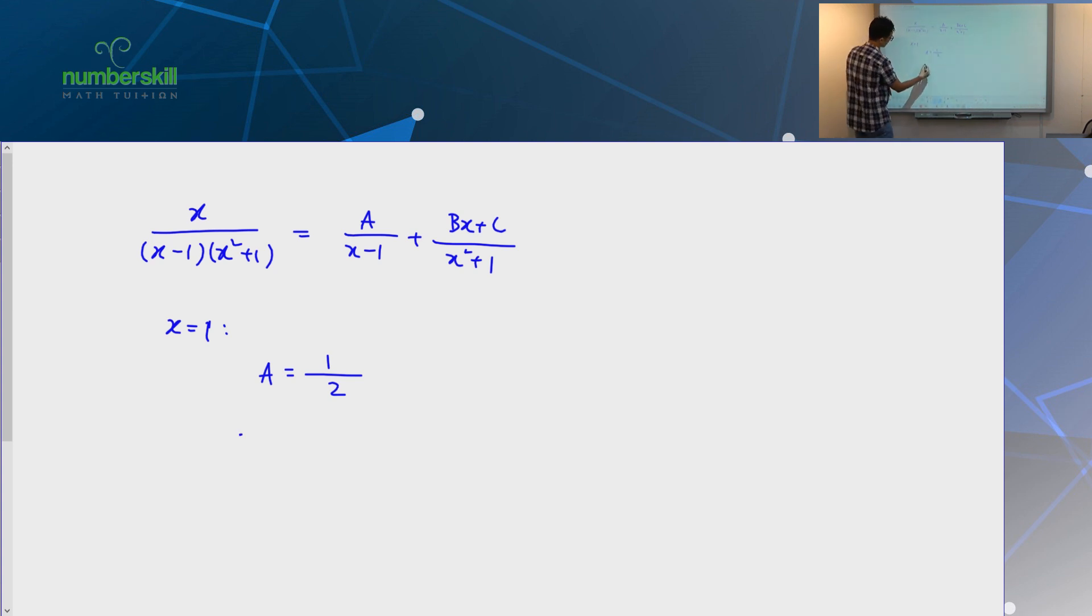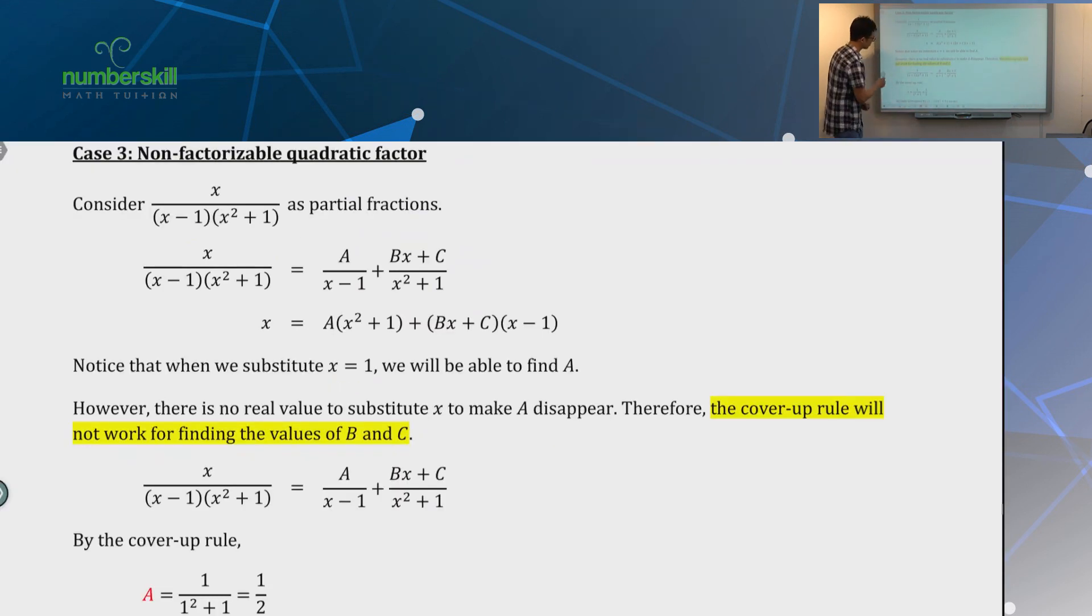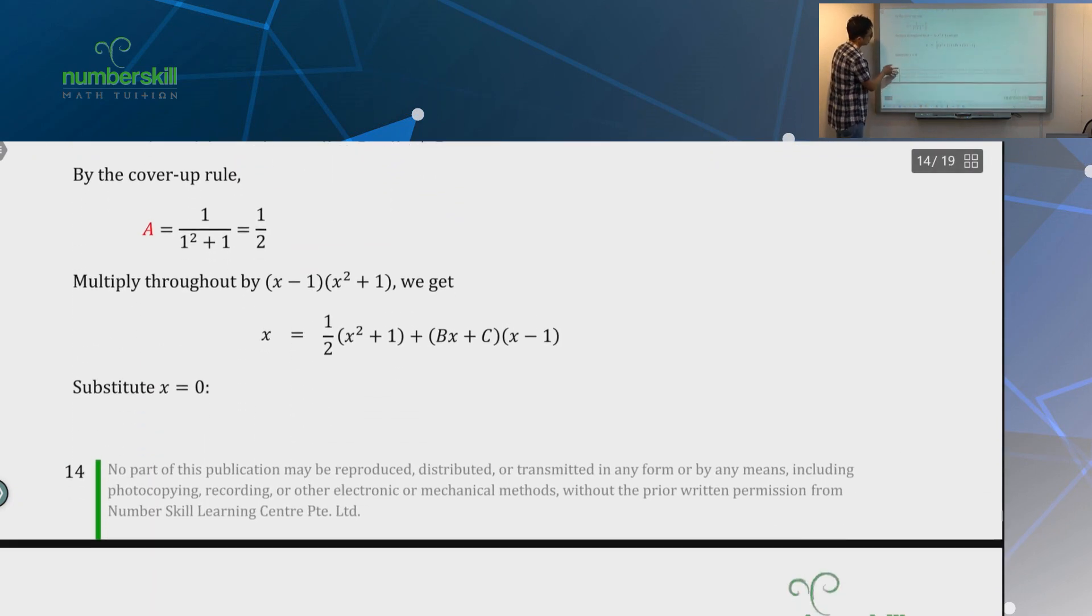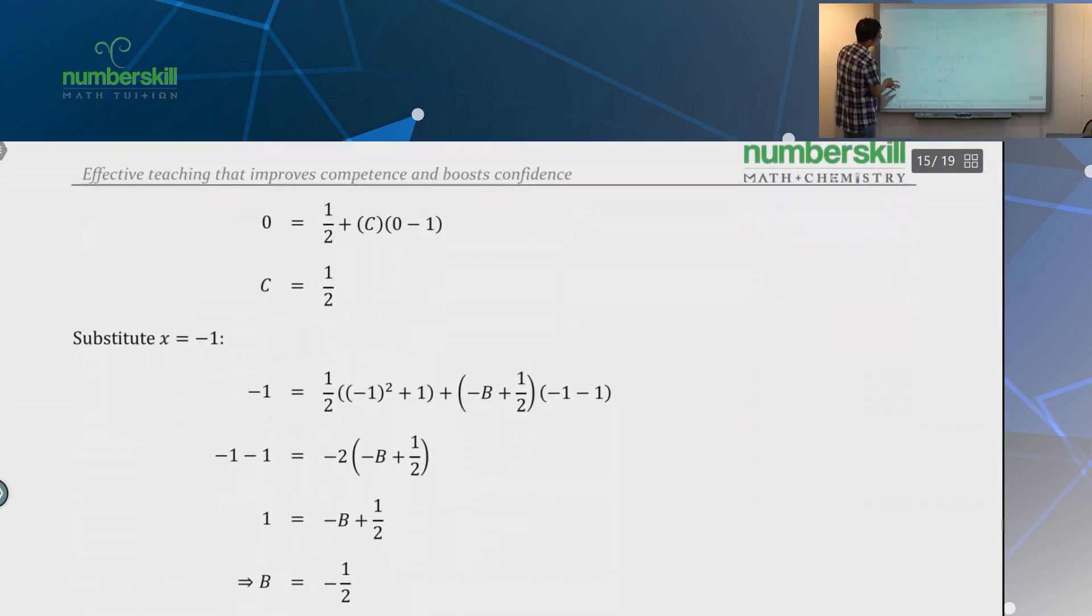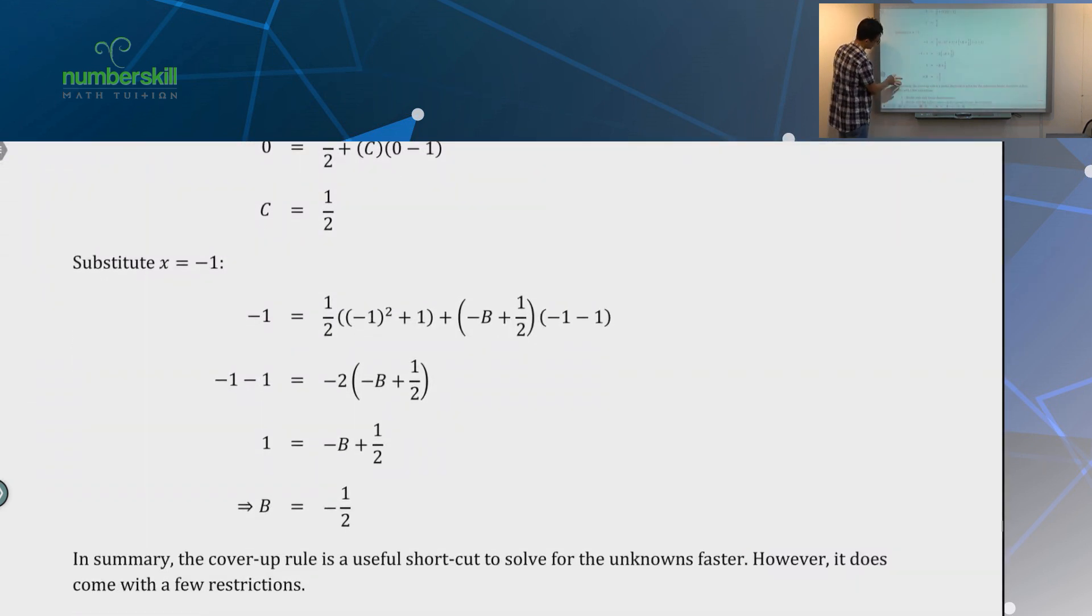But B and C cannot. So, don't even bother trying. So, B and C, you have no choice, but you do the normal way, which is to flatten. And then, but you already found what's A. So, A is half. And then you solve this yourself. At least you got one done fairly quickly. Understand what I'm talking about? So, cover up rule is a shortcut. So, if you want to use it, you have to learn it well.